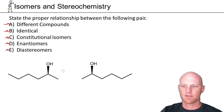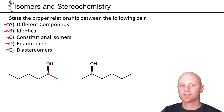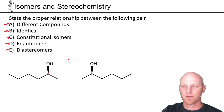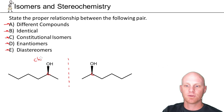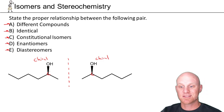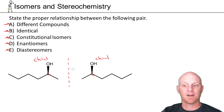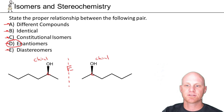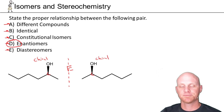These two compounds both have six carbons, and they both have a chiral center, so they're chiral. As you can tell, they're also mirror images of each other. If you have one chiral center, you're chiral. These are chiral and they're mirror images, so they must be enantiomers of each other.